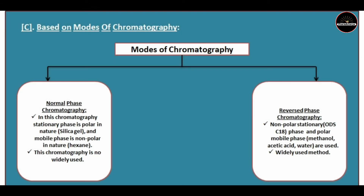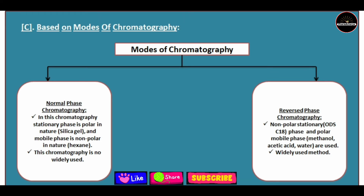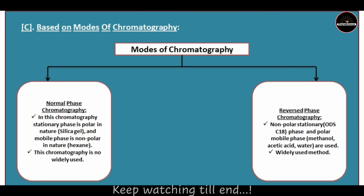On the basis of modes of chromatography, there are two types: normal phase chromatography and reversed phase chromatography. In normal phase chromatography, the stationary phase is polar, for example silica gel, and the mobile phase is non-polar, e.g. hexane. This type is not widely used nowadays. In reversed phase chromatography, a non-polar stationary phase such as ODA C18 column is used, with polar mobile phases such as methanol or acetic acid in water. These are the most widely used and accepted methods of chromatography today.